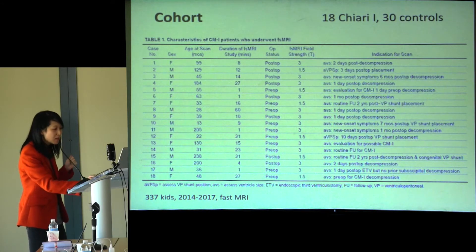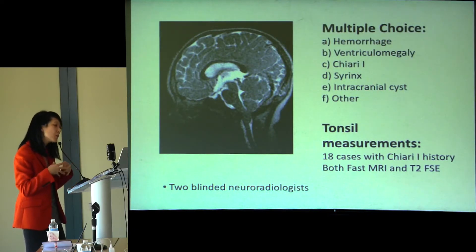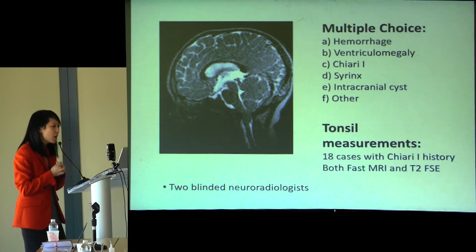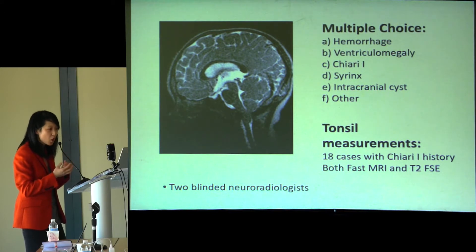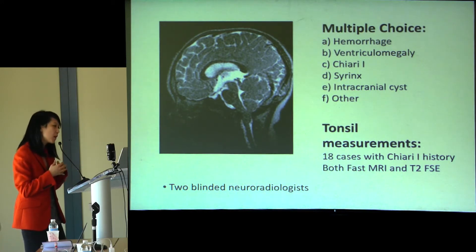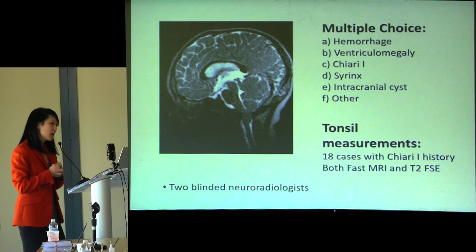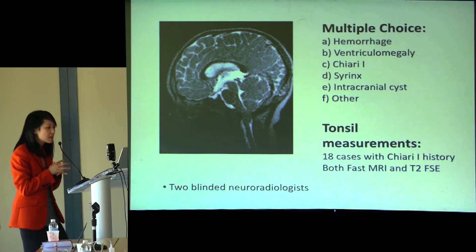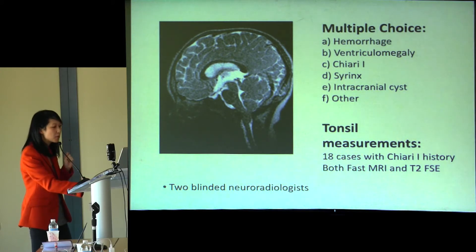This is retrospective data. We pulled all these scans, randomized them, and blinded two neuroradiology fellows — now attendings — to review them. Fast scans are normally done for basic things like cysts, big ventricles, or large hemorrhages. We gave reviewers multiple choice options to identify what they saw, including whether tonsils were low. In a second blinded run, for cases with Chiari as defined by gold-standard full MRI, reviewers performed tonsillar measurements on both the conventional T2 MR and the fast sequence.